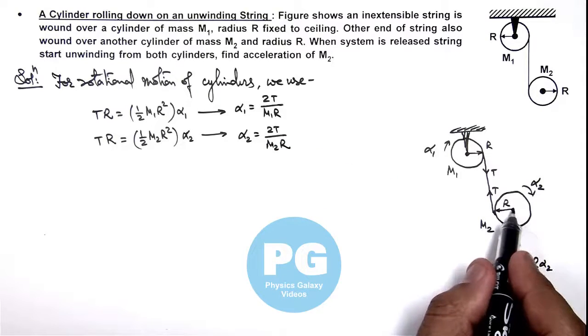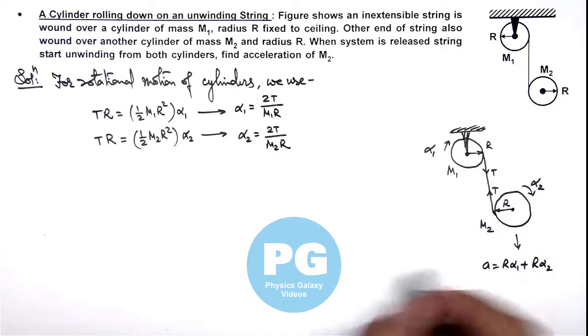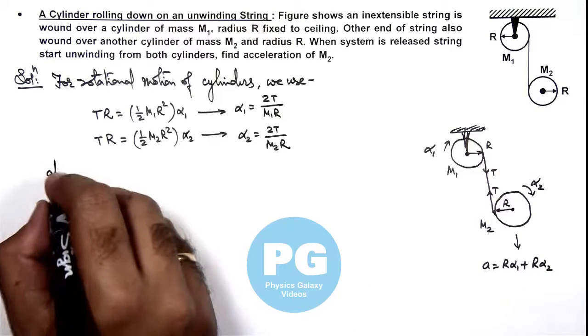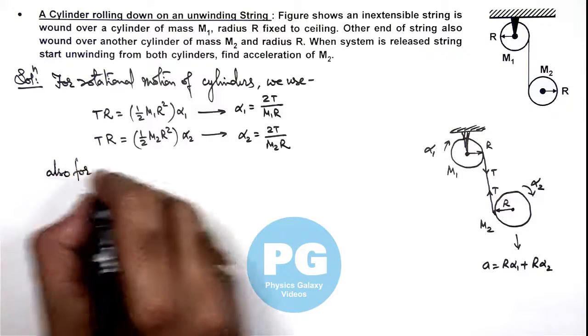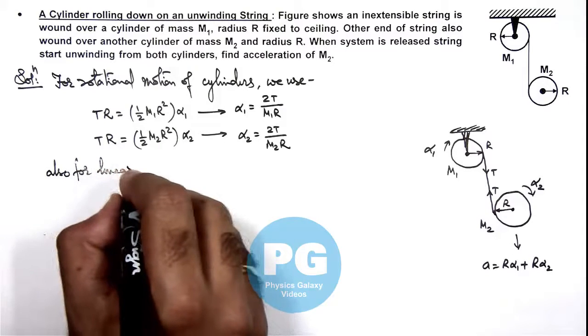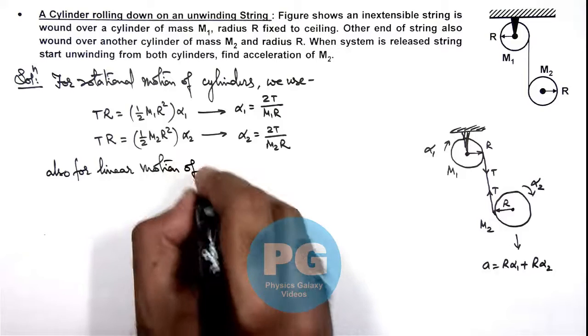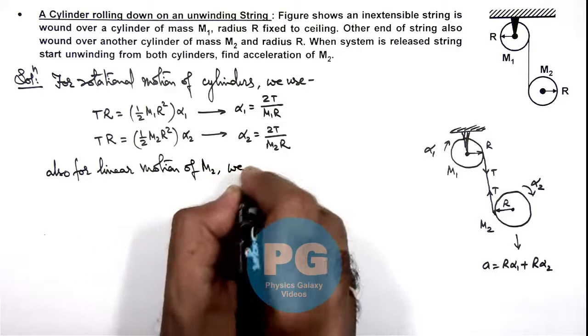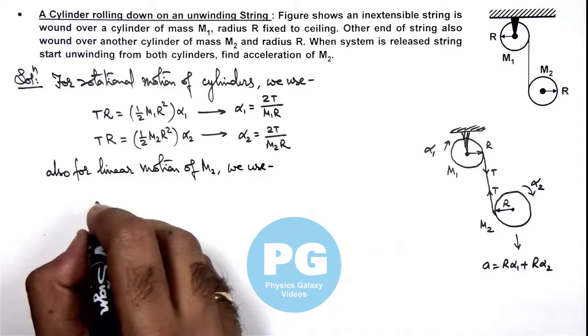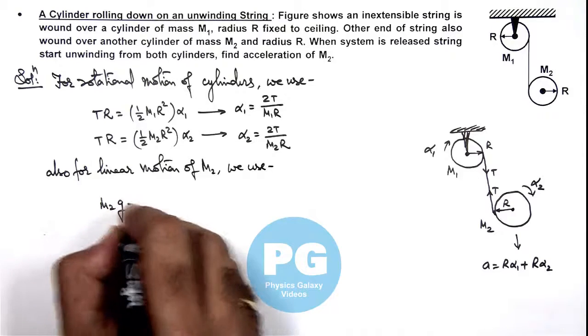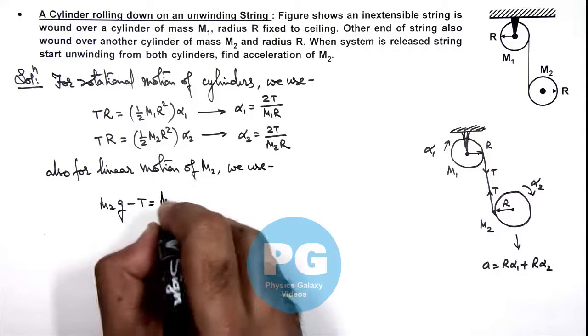For linear motion of the cylinder of mass m2, we can write m2 g minus T is equal to m2 a.